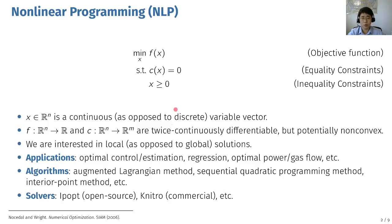For example, optimal control and estimation problems can be expressed in terms of NLPs, and these are successfully applied to chemical processes, energy systems, robotics, and many others. Furthermore, nonlinear regression, optimal power flow problems, and gas network operation problems can also be formulated as NLPs.